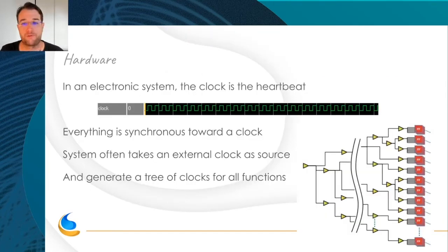So the structure. A clock in the system is the heartbeat of the system. Everything is synchronous to a clock. Often the system takes a source of clock, an external clock like an oscillator or a crystal, and generates what we call a tree, a clock tree. It will divide, multiply, gate, or whatever the clock, to give each function of the SOC a particular clock with a specific phase, a specific duty cycle, and so on.